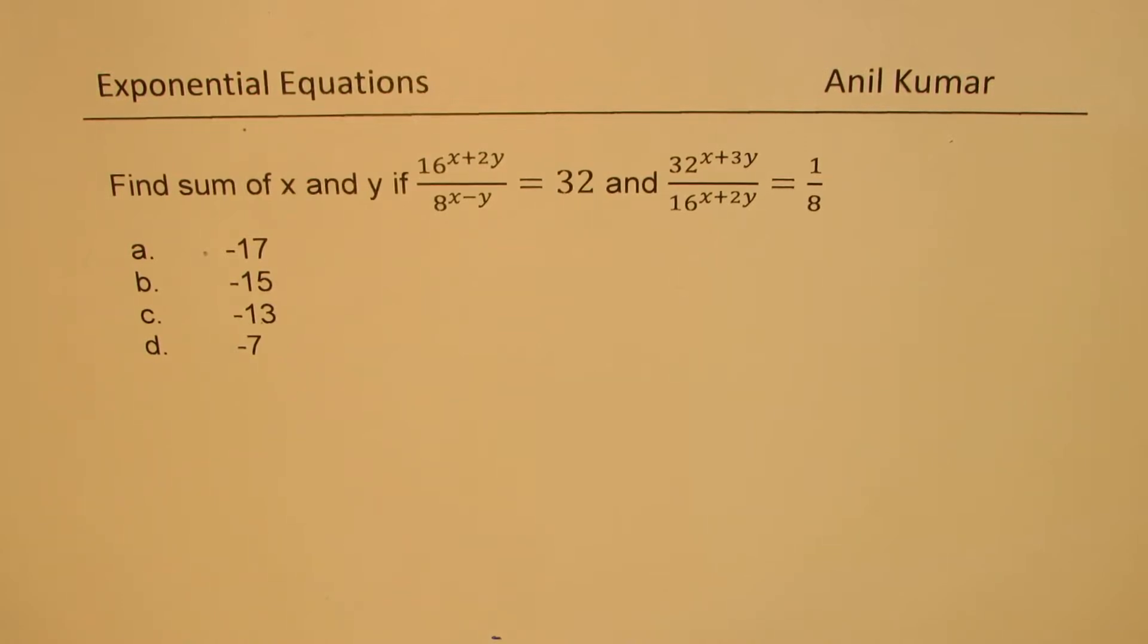Find sum of x and y if 16 to the power of x plus 2y over 8 to the power of x minus y equals 32, and 32 to the power of x plus 3y over 16 to the power of x plus 2y equals 1 over 8.